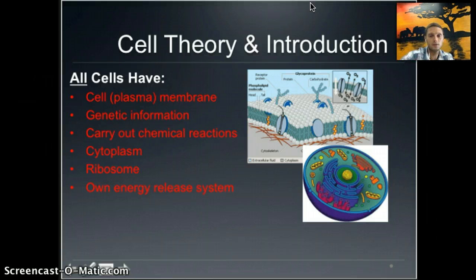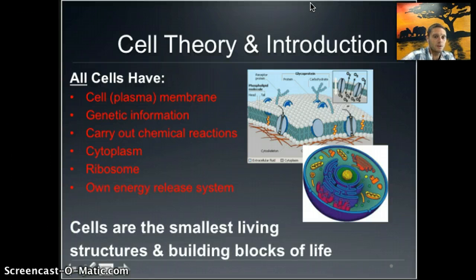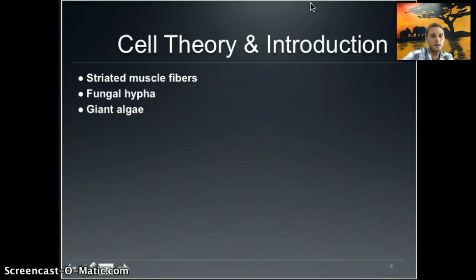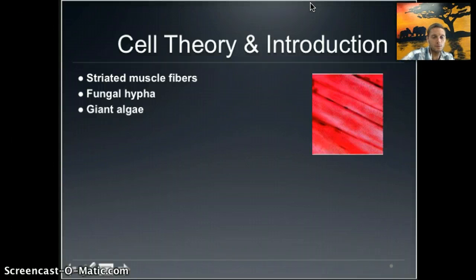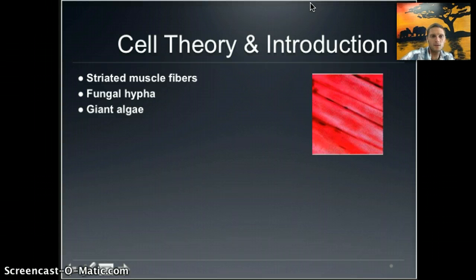Cells need energy in order to be able to do things. Cells are the smallest living structures and building blocks of life. We're going to look at a couple of different examples of cells. The first is a striated muscle fiber cell, and as we get into cell theory, these cells are slightly different than what you would expect from the cell theory.